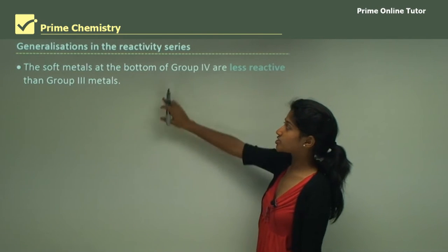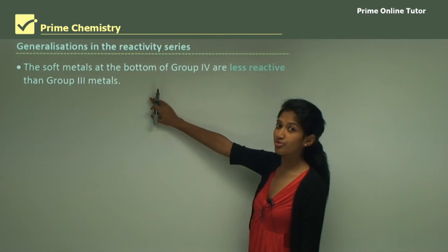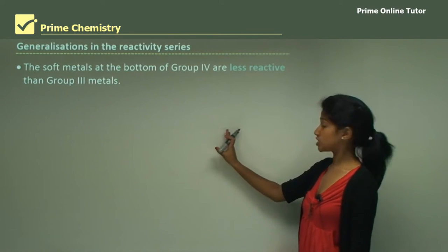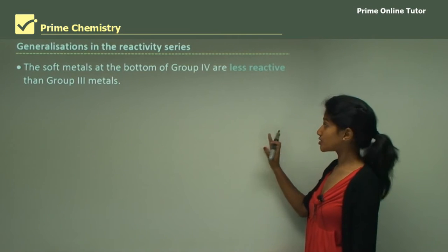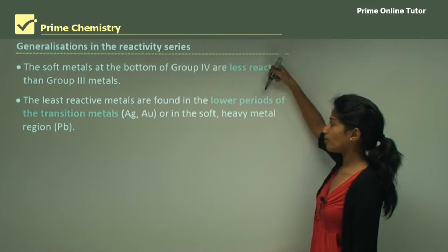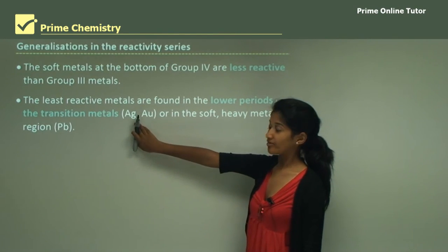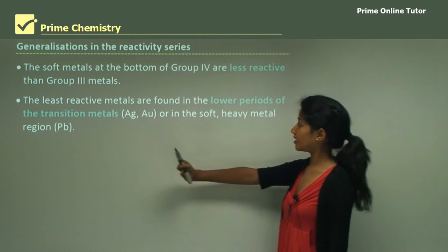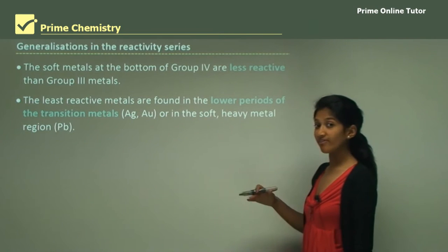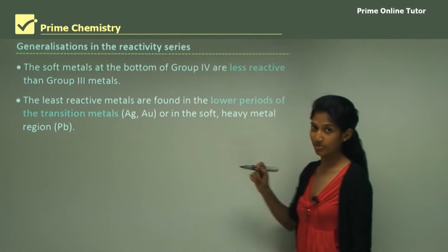The soft metals at the top of group 4 are less reactive than group 3 metals. It's not a pattern, it goes step by step and the least reactive metals are found in the lower periods of the transition metals such as gold and silver or in the soft heavy metals such as lead.